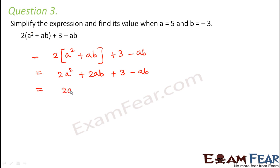So let us collect the like terms together. So 2a² plus 2ab minus ab because both of these are like terms. Both of them have the same algebraic factor which is ab plus 3. So 2ab minus ab will be equal to ab because 2 minus 1 is 1. So plus ab plus 3.